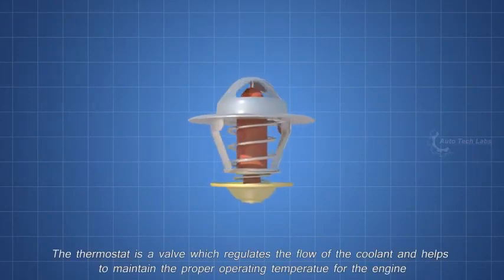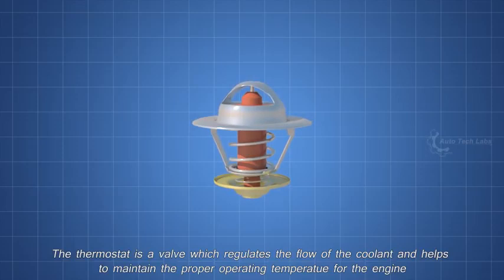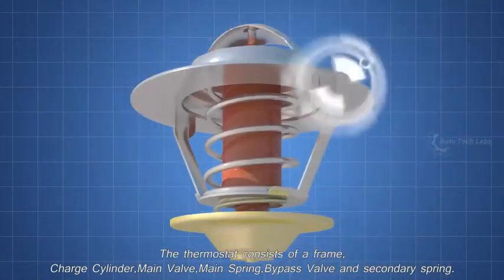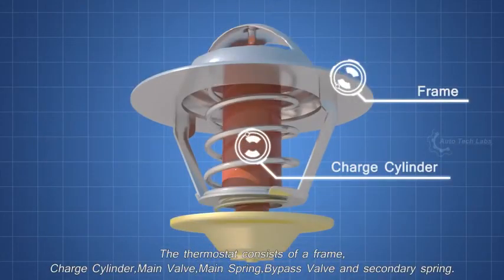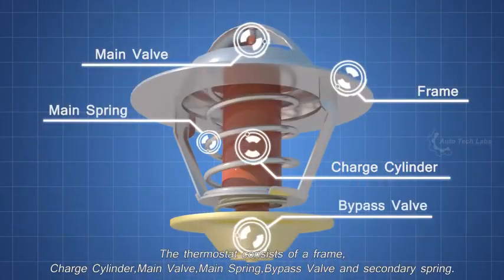Next, the thermostat. The thermostat is a valve which regulates the flow of the coolant and helps to maintain the proper operating temperature for the engine. The thermostat consists of a frame, charge cylinder, main valve, main spring, bypass valve, and secondary spring.